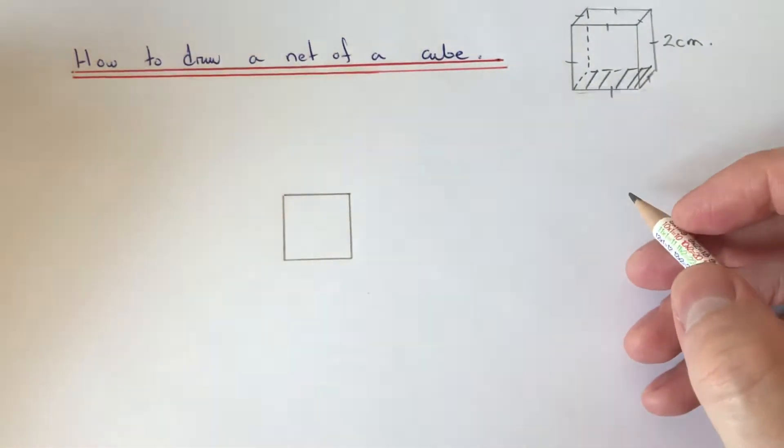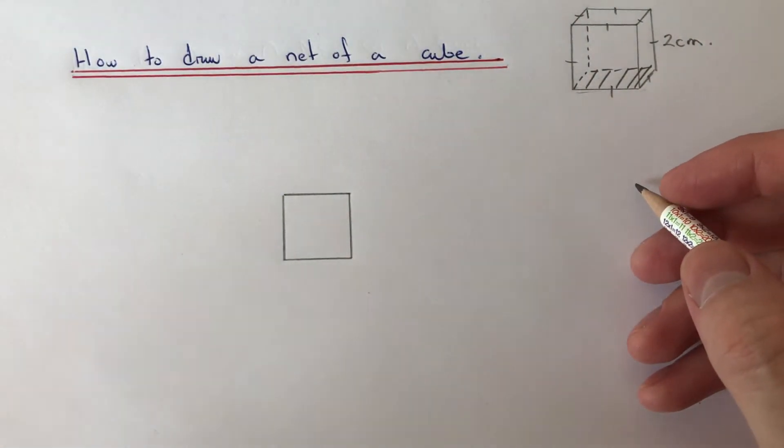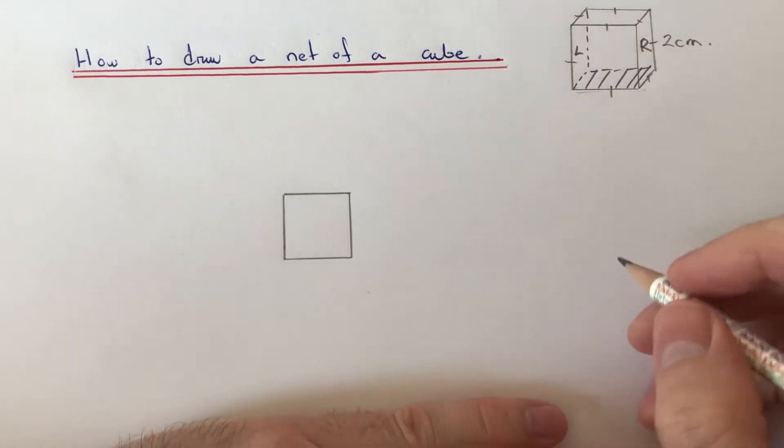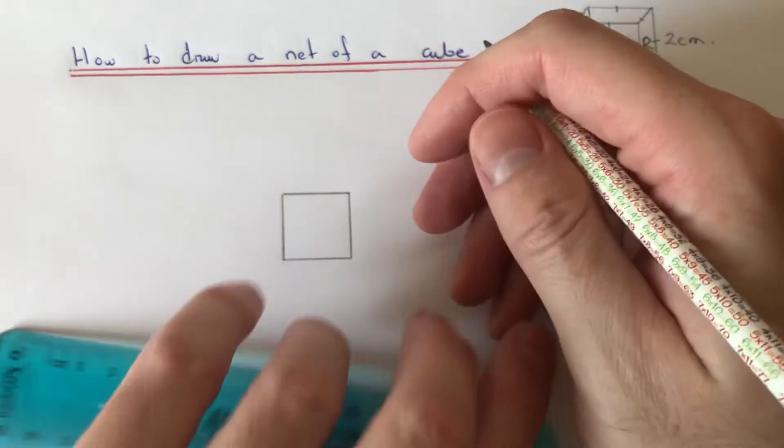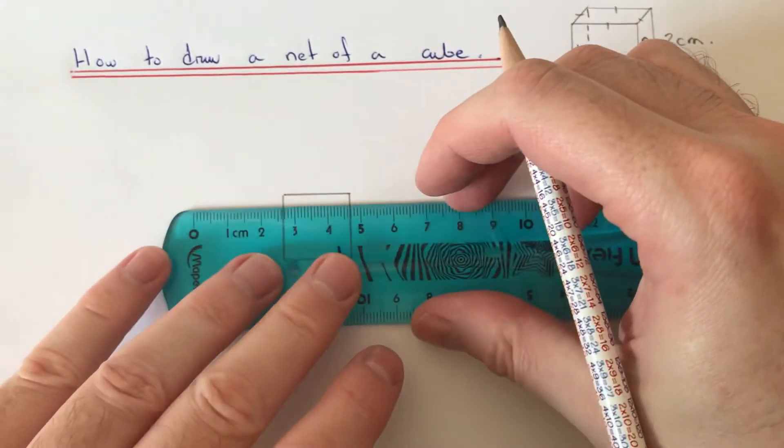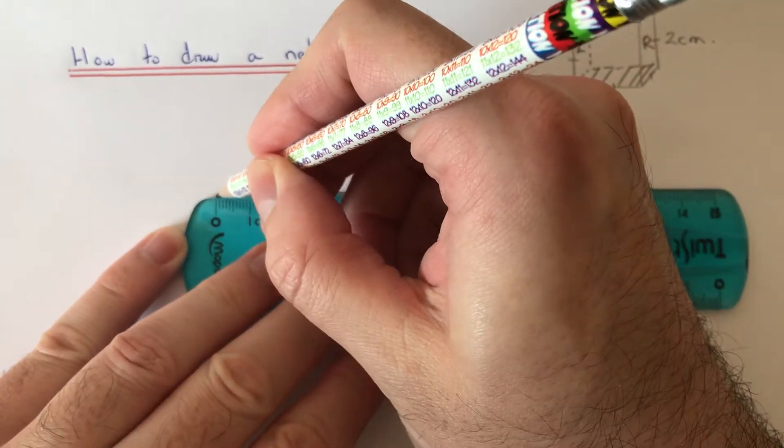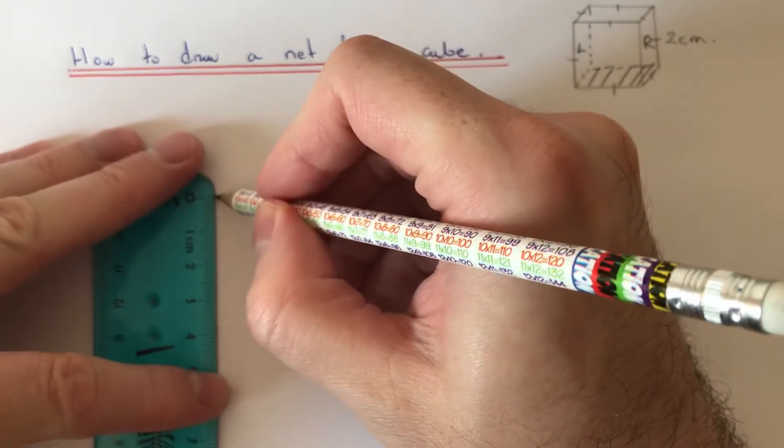That's the bottom face done. Next, we're going to put the left face and the right face. Again, it's a two centimeter by two centimeter face, so we'll put that one on the side there, and then do the right face.